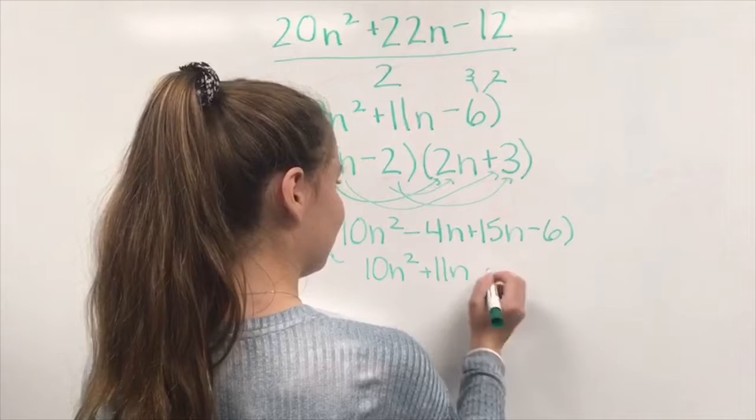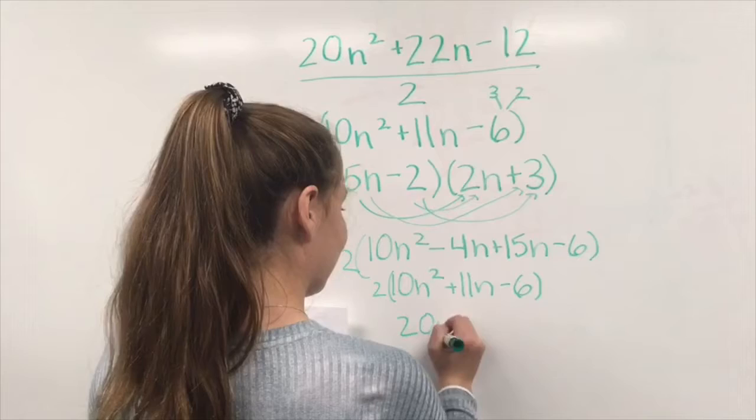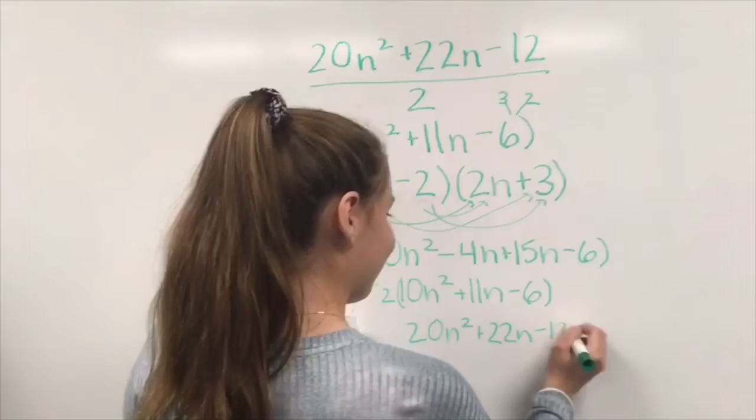You get 10n squared minus 4n plus 15n minus 6, which simplifies to 10n squared plus 11n minus 6.